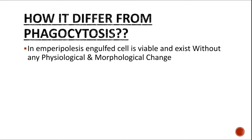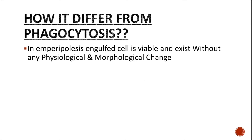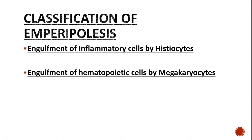You might ask how emperipolysis differs from phagocytosis, since both involve cell engulfment. In emperipolysis, the engulfed cell is totally viable and is not degraded — it exists without any physiological or morphological change. You can see this neutrophil has no morphological change and is an intact cell within the megakaryocyte. In phagocytosis, the engulfed cell gets destroyed by hydrolytic enzymes, but that does not happen here.